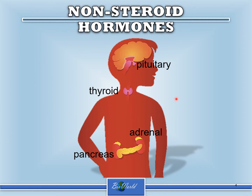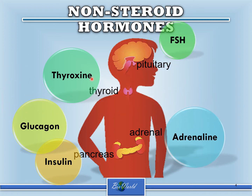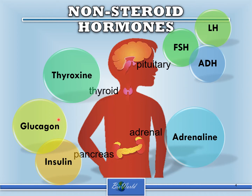Let's now have a look at examples of non-steroid hormones. Starting off with thyroxin, secreted by the thyroid gland — it helps to regulate our metabolism. Then you have glucagon and insulin, both of which are secreted by the pancreas to regulate our blood glucose levels. The adrenal gland will synthesize adrenaline, which helps in the flight or fight response. You must remember the adrenal gland also secretes steroid hormones like cortisol and aldosterone, so memorize these examples carefully so that you do not confuse examples of steroid hormones and non-steroid hormones.